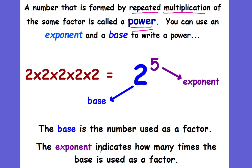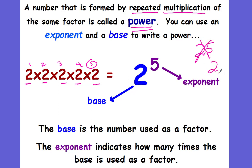The exponent is the 5. The exponent indicates how many times the base is used as a factor. How many times did we multiply 2 together? We multiplied 2 together 5 times, so 5 is the exponent. The number being repeated — in this case the 2 — is the base; it's the larger number. How many times it's being repeated — 1, 2, 3, 4, 5 times — is your exponent. The exponent is smaller than the base, raised and always to the right. We don't write it at the same level, because that would be 25, and we don't write it as a subscript. It always goes raised and to the right of the base.